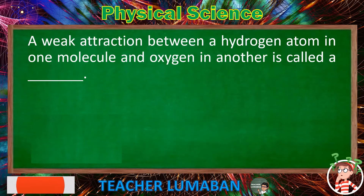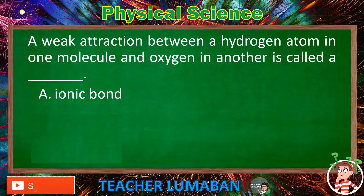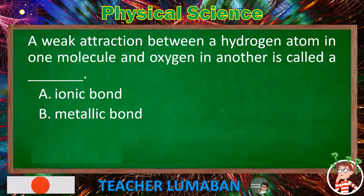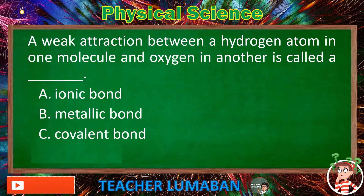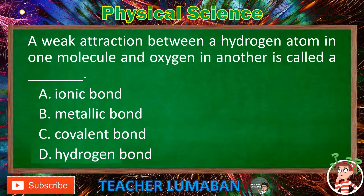A weak attraction between a hydrogen atom in one molecule and oxygen in another is called a blank. Letter A: ionic bond. Letter B: metallic bond. Letter C: covalent bond. Letter D: hydrogen bond. Choose the suitable answer based on the given choices in 5 seconds.